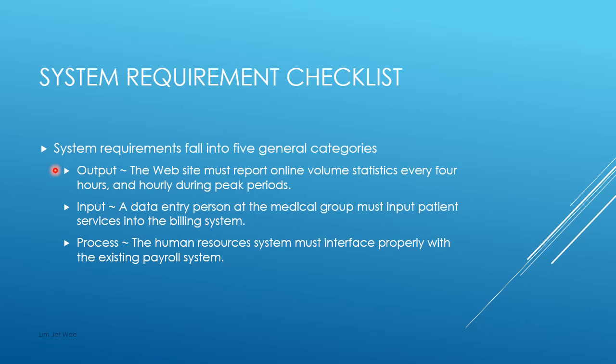It doesn't matter which one you address first. Output could include requirements like getting certain information online or being able to access information through the cloud. Input is also important — we need to identify where the data is coming from and who is going to provide it, even if input is through barcode or QR code.